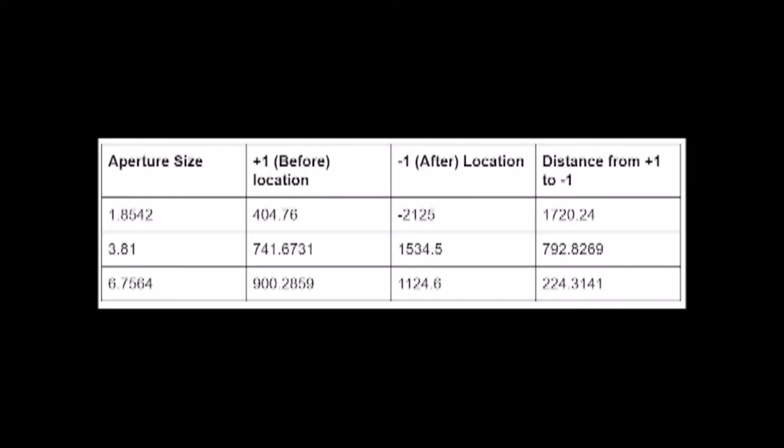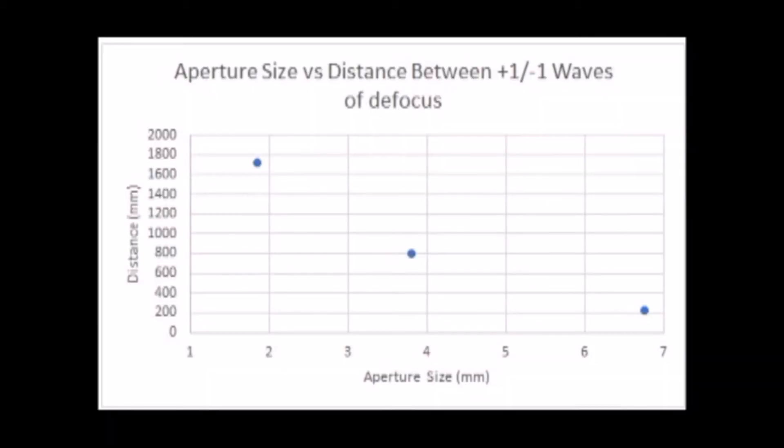The distance z2 was calculated for various Fresnel numbers by changing aperture size to find the plus minus 1 wave of defocus shown in the table. The location of best focus was found by taking the average of the two locations of plus and minus 1 wave of defocus for each aperture size. We found an inversely proportional relationship between aperture size and separation between the plus and minus 1 wave of defocus.